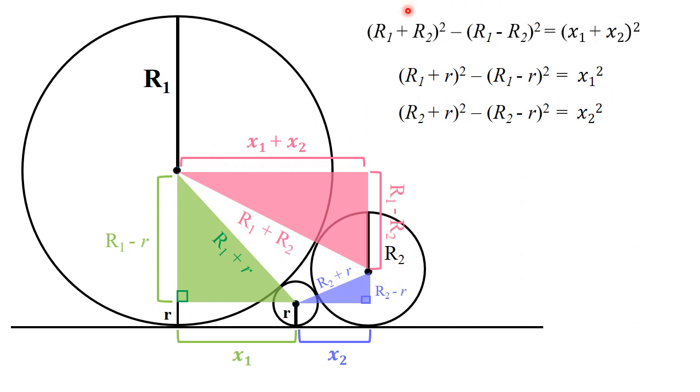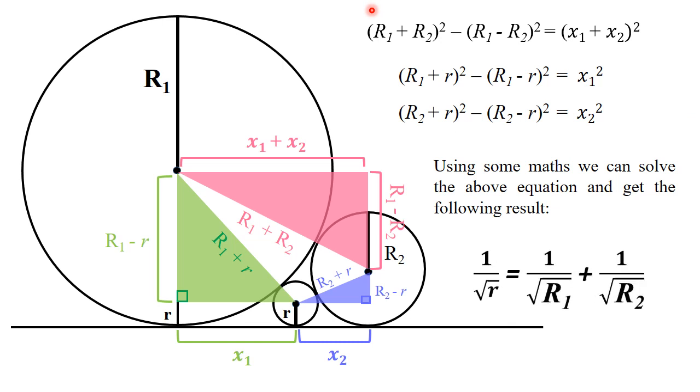When I applied Pythagoras in the pink triangle, the answer came. Now friends, we have to solve these three equations. We will use some math to calculate. When you calculate and get the answer, it will come in this form. Friends, this is the general equation. If this question is generalized for you, the general formula will work in this way. Thanks for watching.